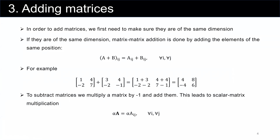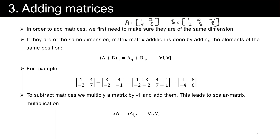In order to add two matrices, first we have to make sure that they have the same dimension. For example, we cannot add matrix A, which is 1, 2, 4, 6, and matrix B, which is 1, 0, minus 1, 2, 3, 8. Because matrix A is 2 by 2 and matrix B is 2 by 3. So their dimensions don't match, and hence we cannot add these two matrices.